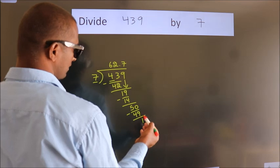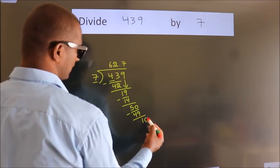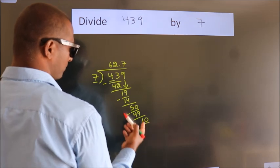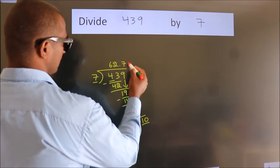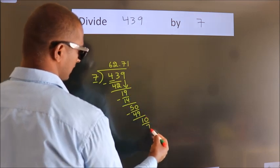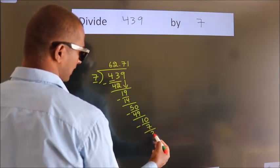After this, we already have the decimal, so directly take 0, giving us 10. A number close to 10 in the 7 table is 7 times 1, which is 7. Now we subtract. We get 3.